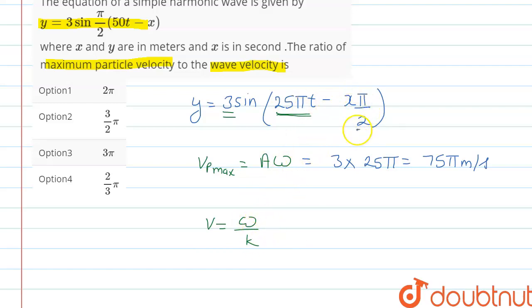So putting the values: ω = 25π and k = π/2. The 2 will be in multiplication, this π will cancel this π, and we will get 50 meters per second.